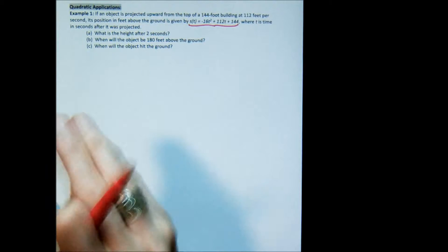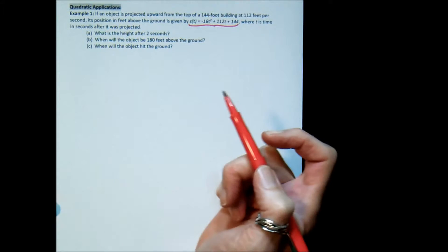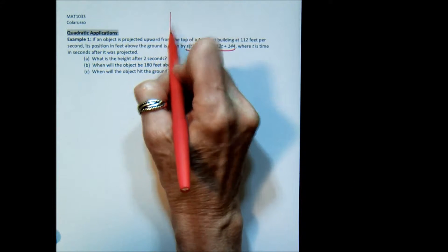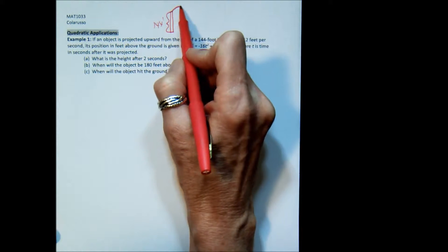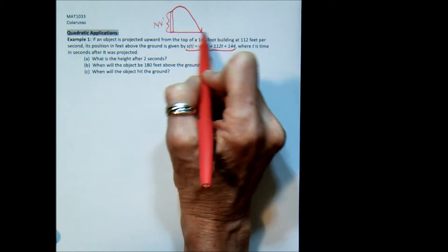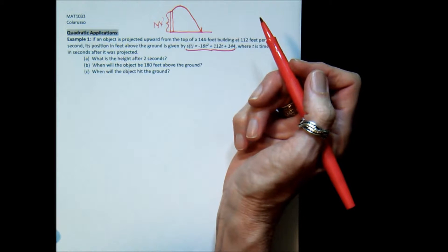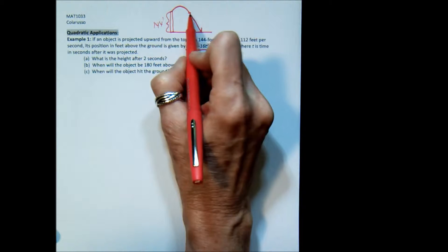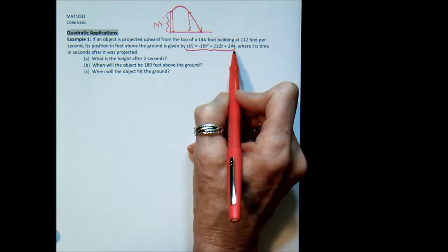Now, before we even start in on the a, b, and c of this problem, let's make sure you have a clear understanding of what's happening. So you have a building, pardon the artwork, that is 144 feet tall, and an object is projected upward off of that building. And at any moment in time, we can find out its position above the ground, the distance off the ground from this equation.